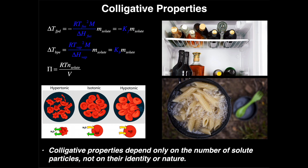That's a colligative property, and there are really four colligative properties, three of which we're going to talk about in the next few videos. The first one, which we'll do here, is called freezing point depression; the second is boiling point elevation; and the third is osmotic pressure.